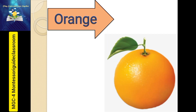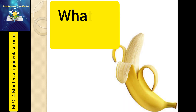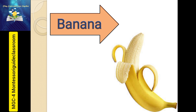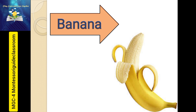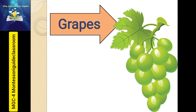Orange. And what is the color of orange? Orange color. What is this? Banana. And what is the color of banana? Yellow.